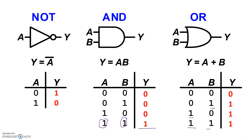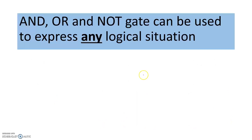These three logic gates can be used to express any logical situation. Any kind of logical situation that we might describe, we can use these three gates, and they're called universal logic gates. AND, OR, and NOT can be used to combine any set of inputs to provide a desired output.